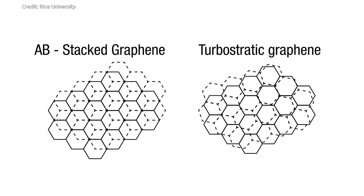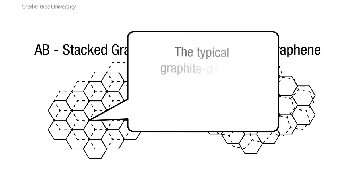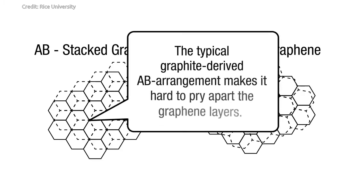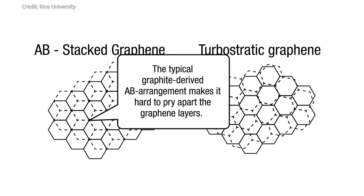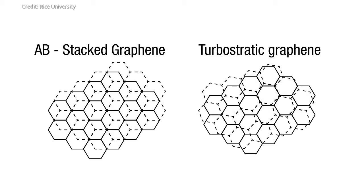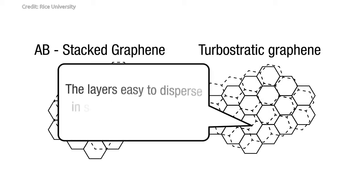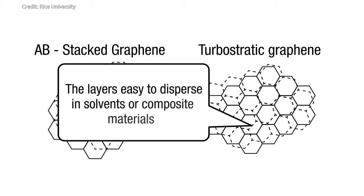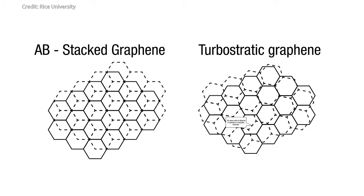Even better, the process produces turbostatic graphene with misaligned layers that are easy to separate. Turbostatic graphene is much easier to work with because the adhesion between layers is much lower. They just come apart in solution or upon blending in composites.